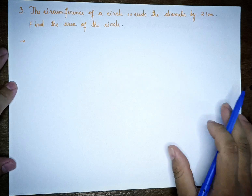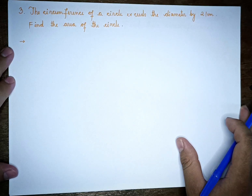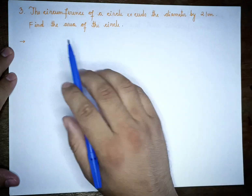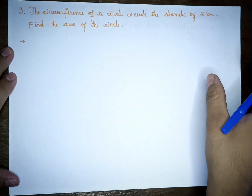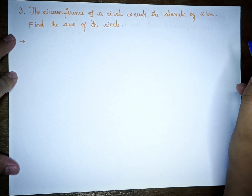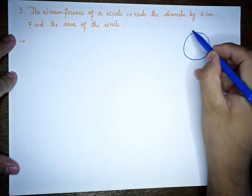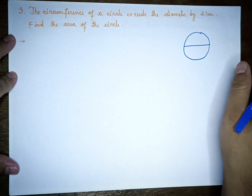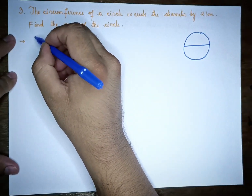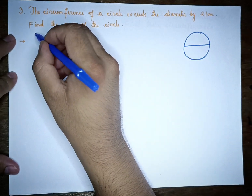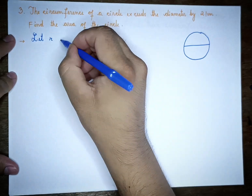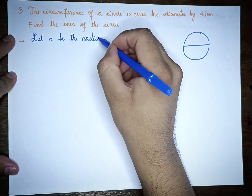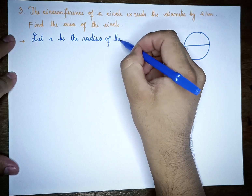Question 3: The circumference of a circle exceeds the diameter by 21 cm. Let the circumference of the circle be defined, and let R be the radius of the circle.